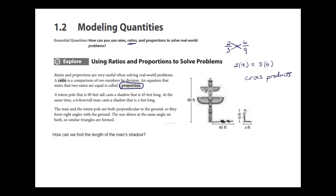We can apply this to a word problem. Here we have a picture of a totem pole that is 90 feet high. The totem pole casts a shadow 45 feet long. At the same time, a man that is 6 feet tall cast a shadow, and we don't know. The question is, how long will his shadow be?